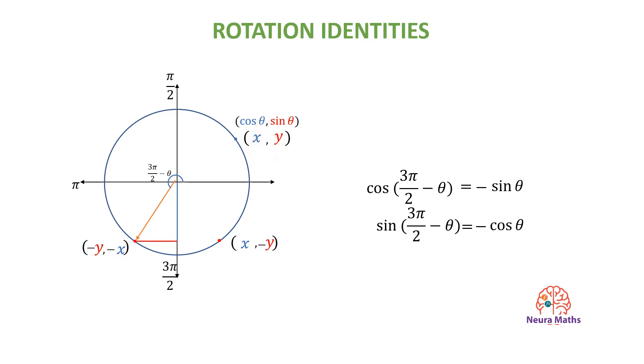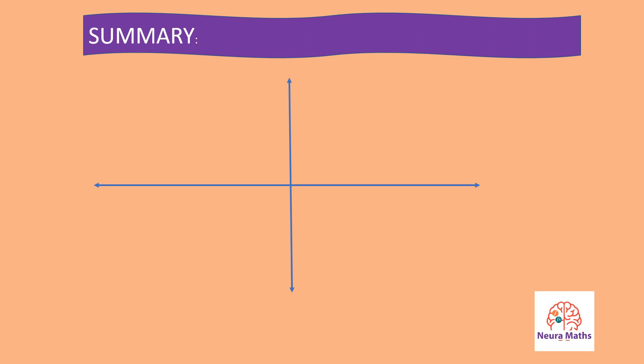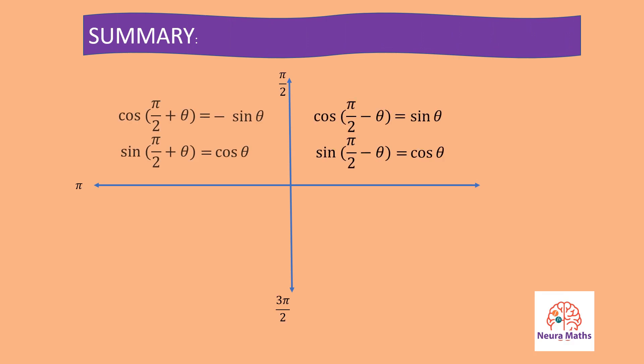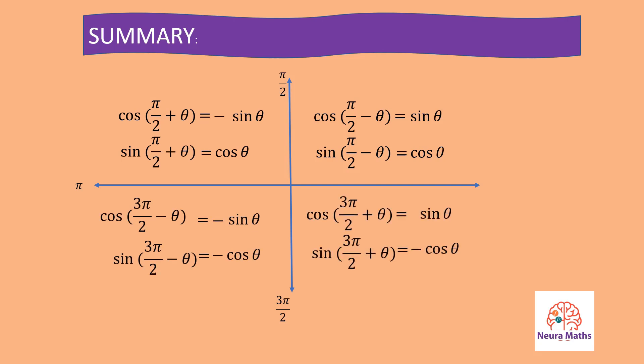To sum up, there is no need to memorize all these identities. Every trig function that has an argument of pi over 2 or 3 pi over 2 is equal to its co-function but with the sign of the function in that quadrant. For example, cosine of pi over 2 plus theta is equal to sine of theta, but cosine is negative in the second quadrant, so it becomes negative sine theta.